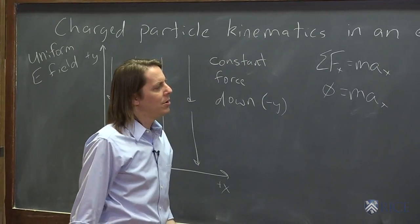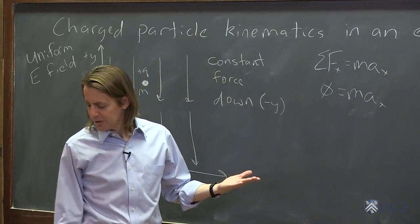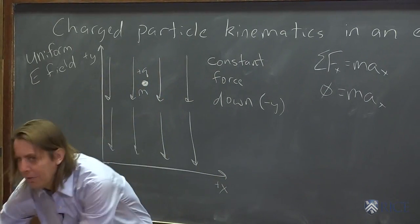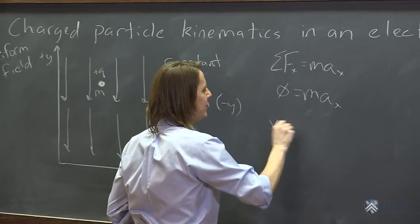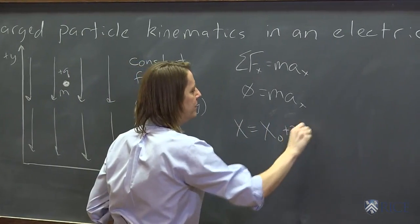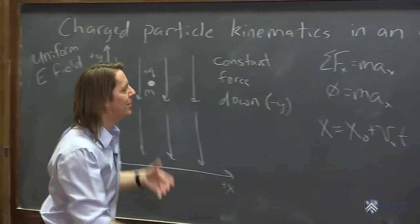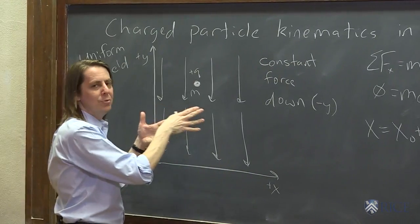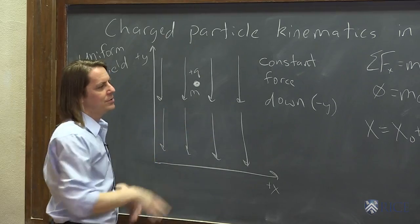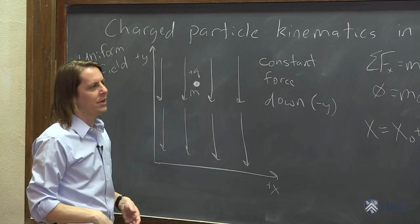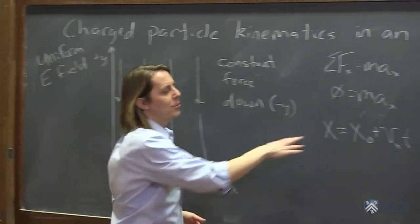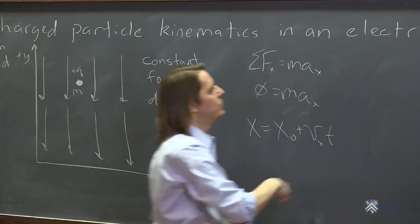So zero equals m a in the x. And then you may recall that when you had no acceleration, one of the standard formulas that you would use would be that x equals x naught plus v x t. So if you have some initial velocity in the x, it might continue to move in the x. You might have some initial position, but it's not going to accelerate in the x. So this would be a formula that you could still use when you're thinking about a charged particle.